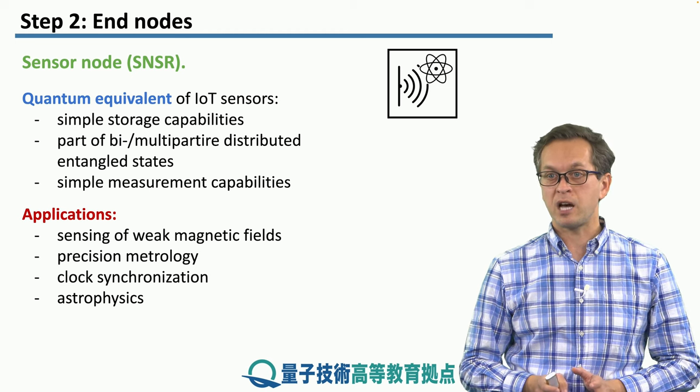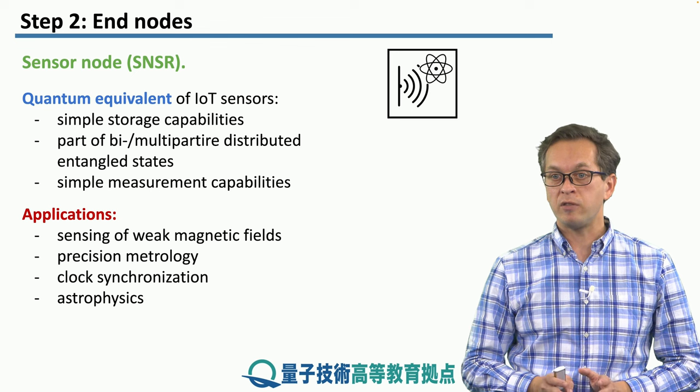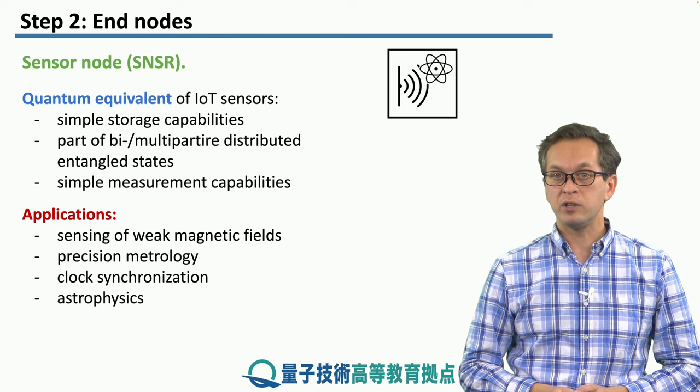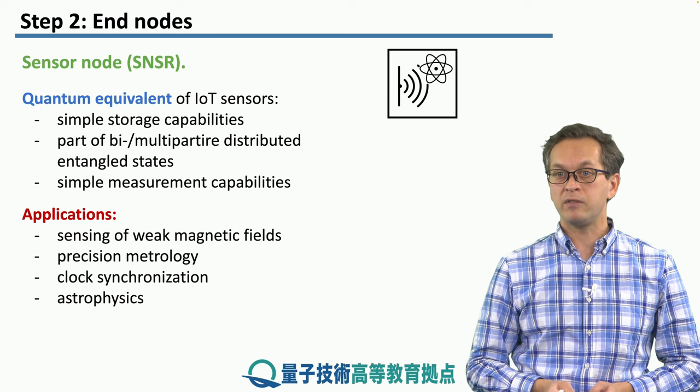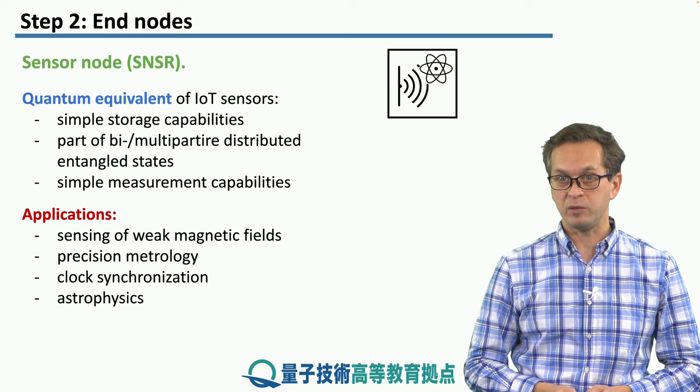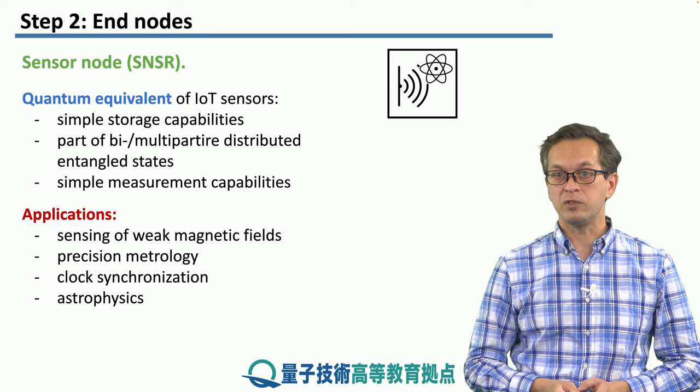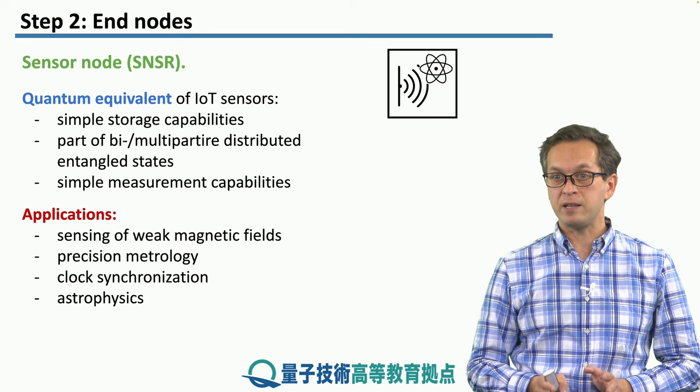So these are the basic types of end nodes. Now there is no clear consensus in the community exactly how many nodes there will be, and exactly what the definitions of their functionalities will be. This is still a topic of debate. Therefore, these are just the basic types.